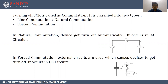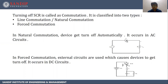Commutation is of two types: line commutation, which is also called as natural commutation, and forced commutation. In natural commutation, the device gets turned off automatically. It occurs in AC circuits. Here in this circuit, we have given an AC supply across the SCR. So during the positive half cycle, the SCR will conduct, and when the negative half cycle of the AC comes, the device SCR will get turned off automatically. So this is natural commutation.